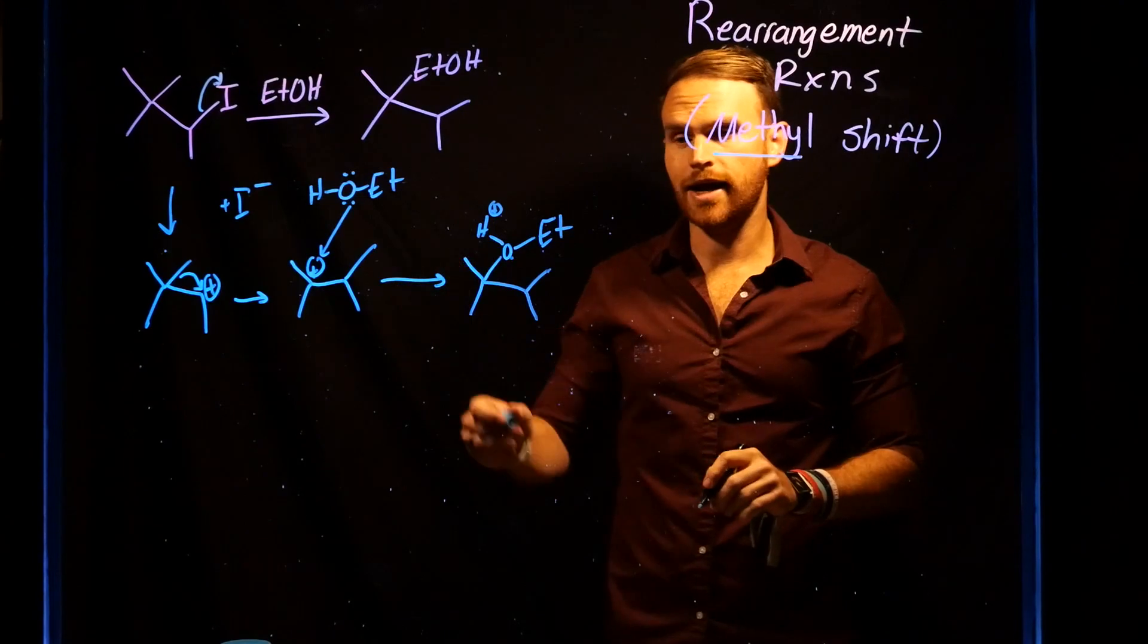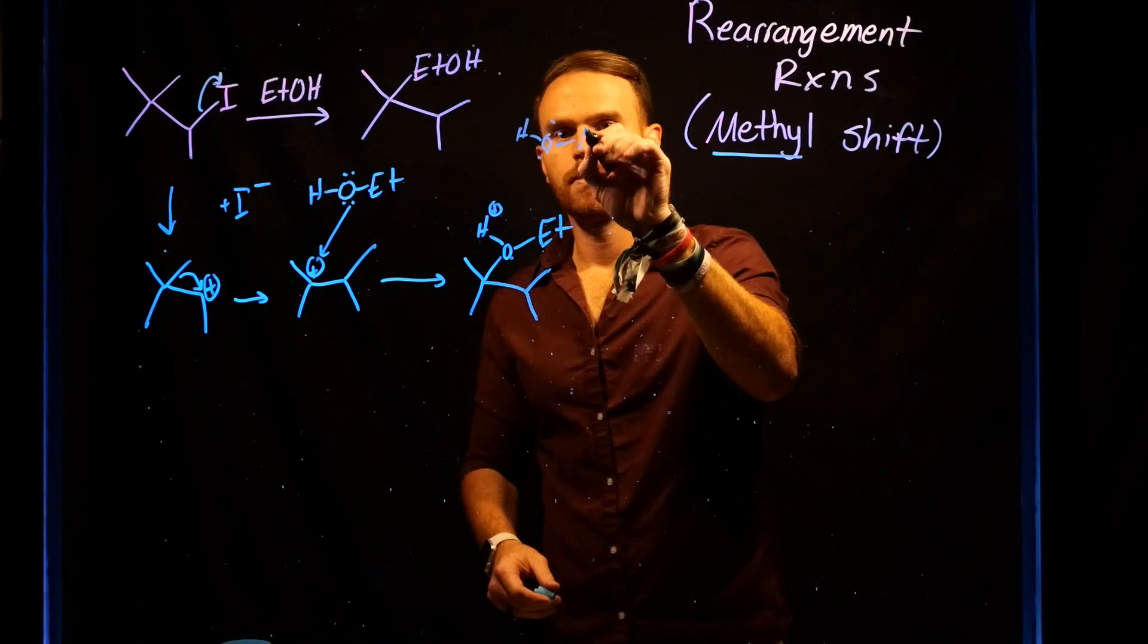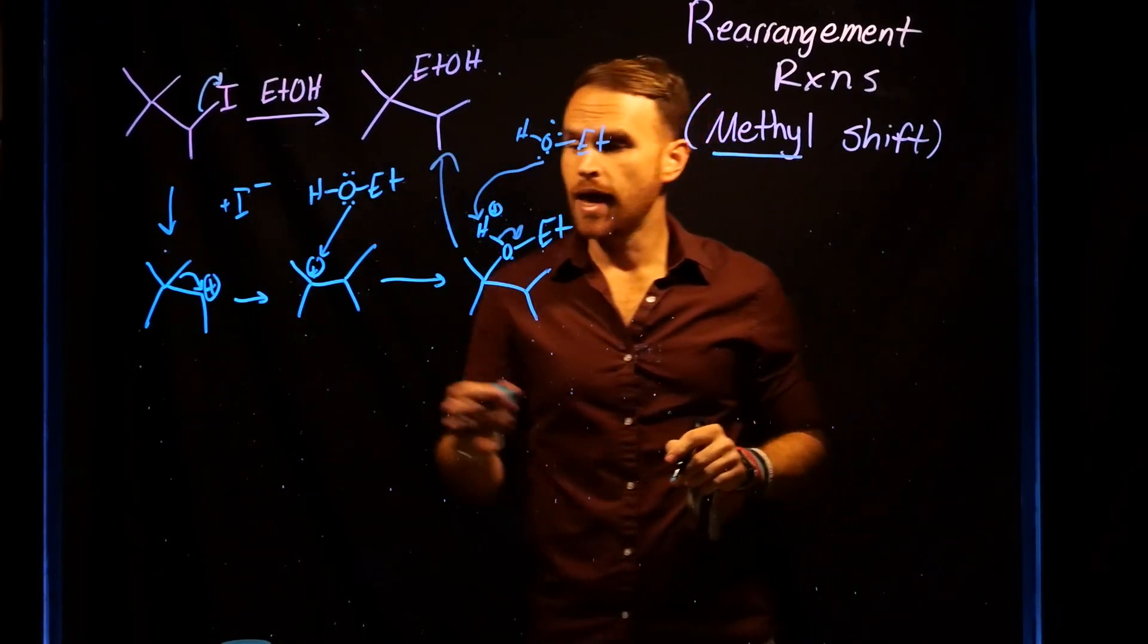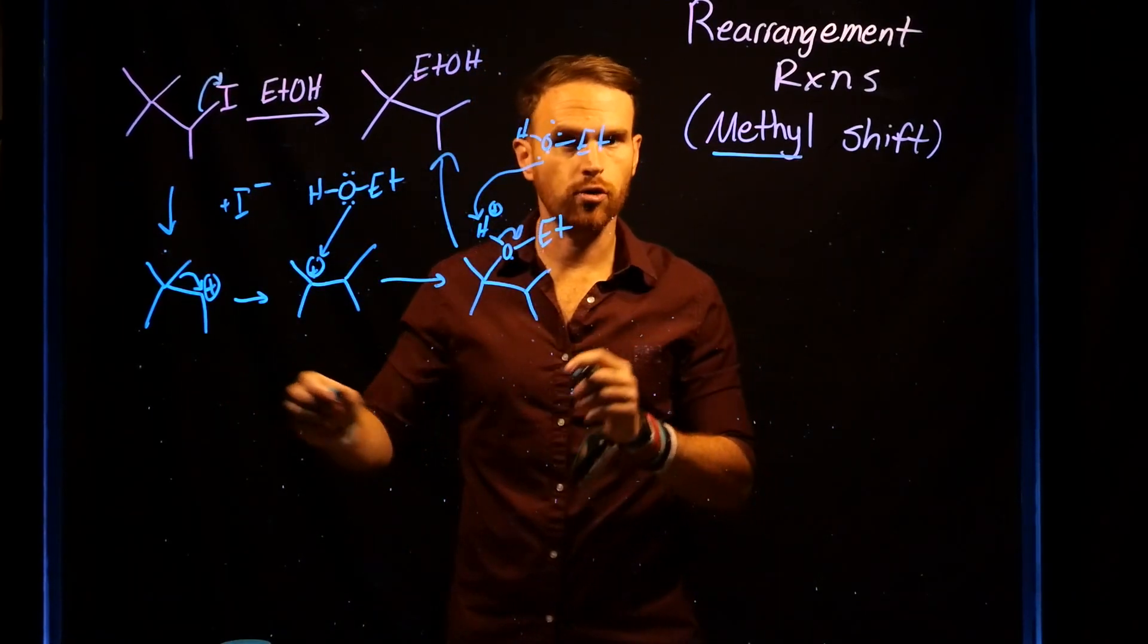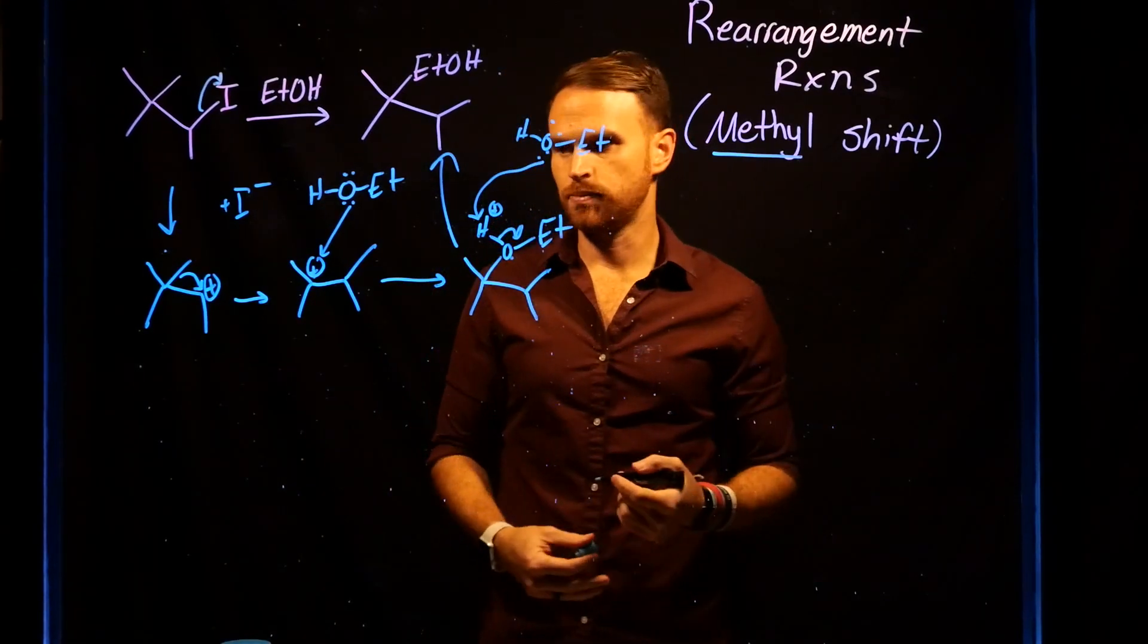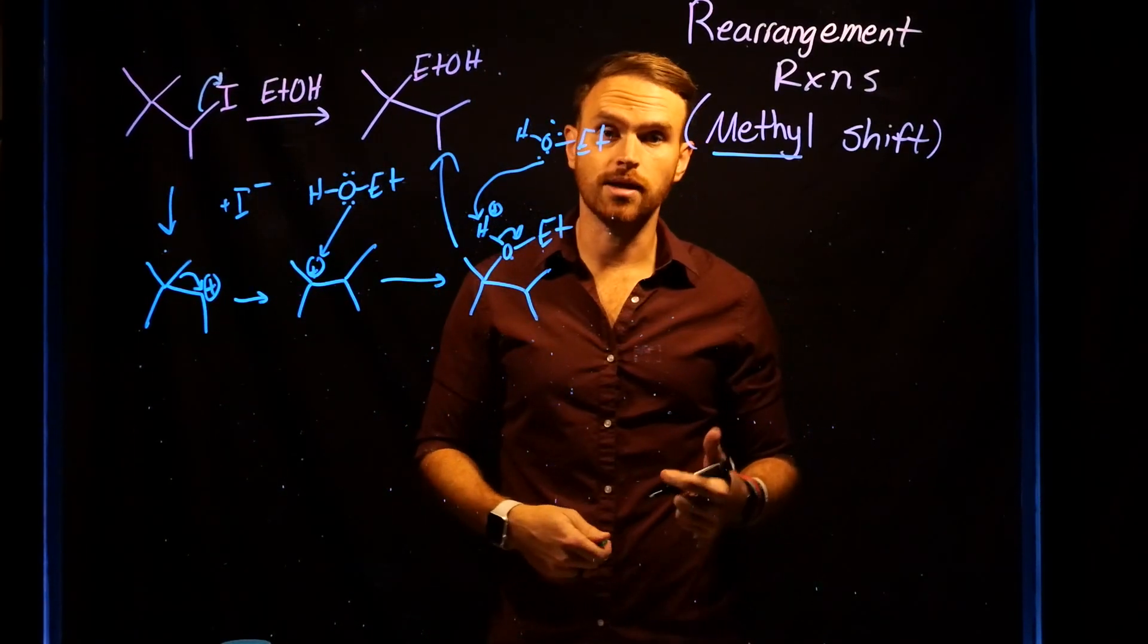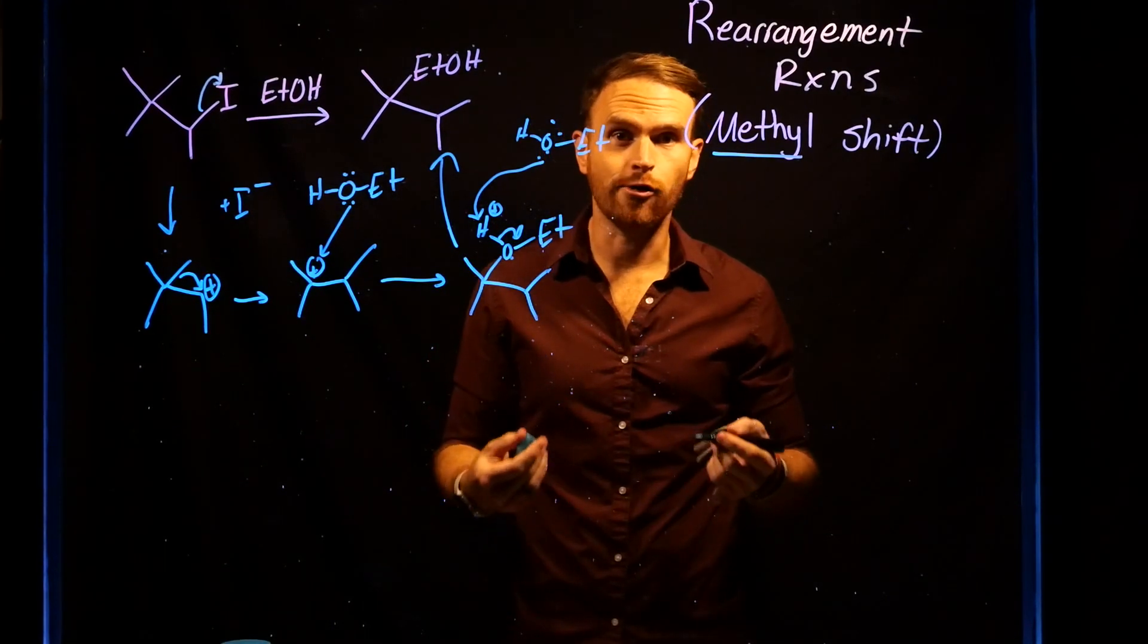Now all that has to happen is another form of ethanol can come and deprotonate this to generate our final product. And again, the key takeaway is that you should be looking for opportunities during your mechanisms and your reaction predictions to generate more stable intermediate species. Because this secondary carbocation is less stable than the tertiary carbocation, this gives rise to things like the hydride shift, the methyl shift in this instance, and even potentially an aryl shift.